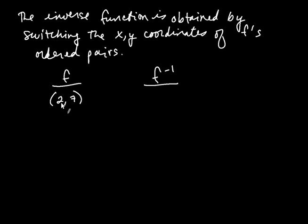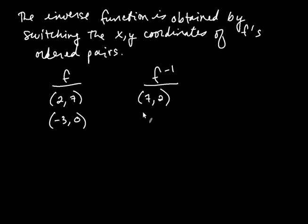For the ordered pair (2, 7), x is 2 and y is 7, so when you switch it you get (7, 2). Likewise, if f had the ordered pair (−3, 0), when you switch those coordinates you get (0, −3). That's all the inverse function is — it's the function that has as its ordered pairs the ordered pairs of f, but with the coordinates switched.